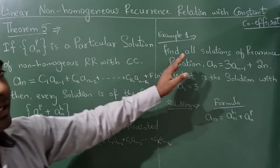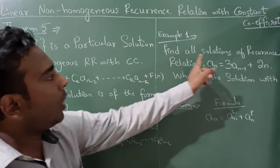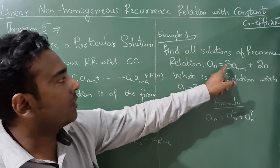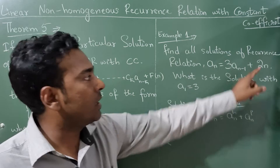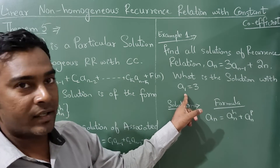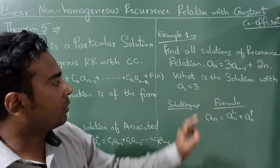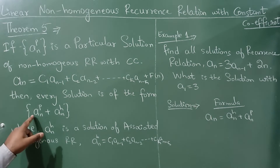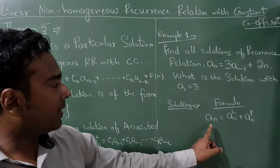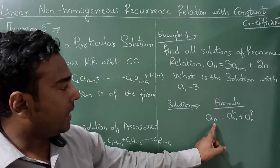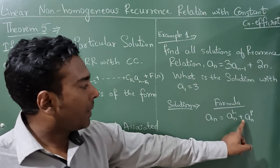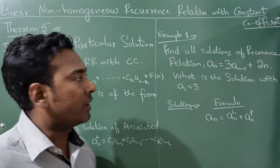So I have considered one example. Find all the solutions of the recurrence relation aₙ = 3aₙ₋₁ + 2n, with initial condition a₁ = 3. The formula here is aₙ = aₙʰ (associated homogeneous) plus aₙᵖ (particular solution).